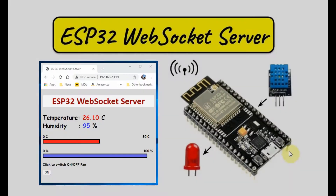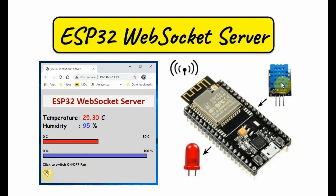A diagram of the implemented system is shown here. We have a DHT11 temperature and humidity sensor connected to one of the digital inputs of the ESP32 controller. We also have an LED connected to a digital output.